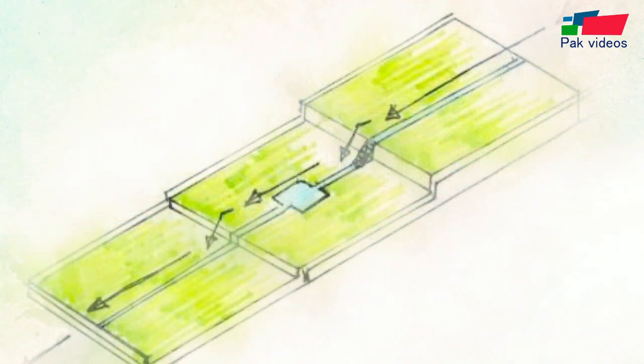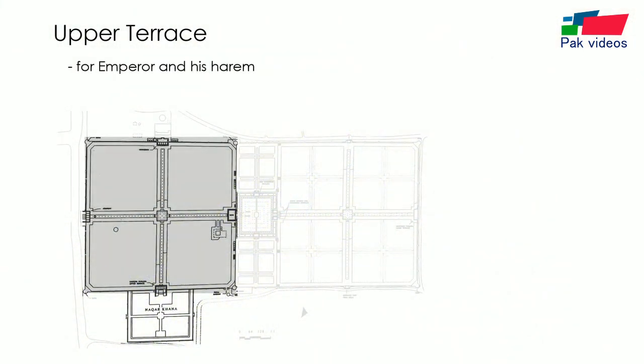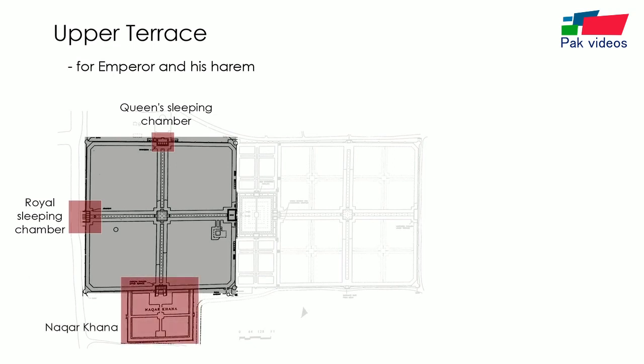Hence, water was brought by canals to the south end of the complex and raised by water wheels to cisterns poised above the gardens. The upper terrace was used by the emperor and his harem. There is an Aramgah, or Royal Sleeping Chamber on the south, and the Begum ki Khwabgah, or Queen's Sleeping Chamber on the west. In the middle of the eastern side, there was a separately enclosed hall known as Nakarkhana.